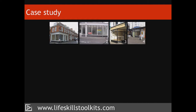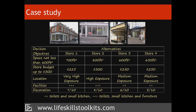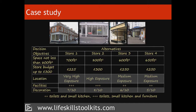Mizuki then considers the consequences for her alternatives. While she has the square footage, rents, and information about the facilities for each store — these are her objective consequences — she creates her own scales for the two subjective consequences: location and decoration. Having identified all of her consequences and not finding any of the stores to be obviously inferior to the others, she draws her consequences table. Mizuki uses a scale of very high, high, medium, low, and very low to describe the exposure each store has to shoppers and office workers. She also uses a score out of 10, where 10 is excellent, to rate the store's state of decoration.